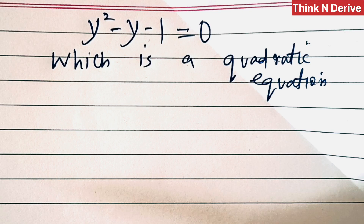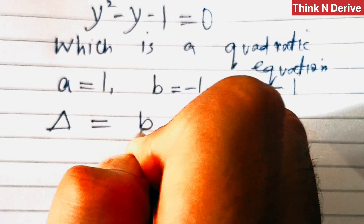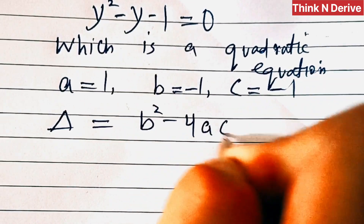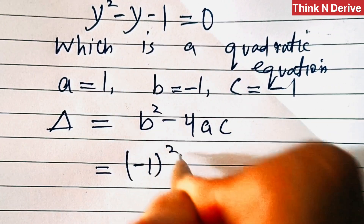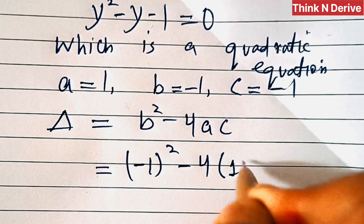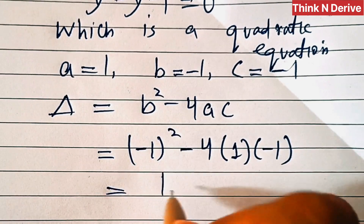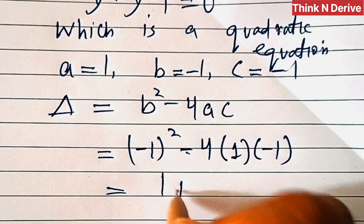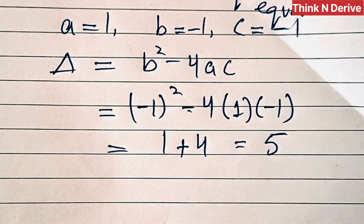Now let's compare this with the general quadratic equation. So we have a equals 1, b equals minus 1, and c equals minus 1. So the discriminant delta equals b squared minus 4ac, which is (-1)² minus 4 times 1 times (-1). This gives us 1 plus 4, so delta equals 5.